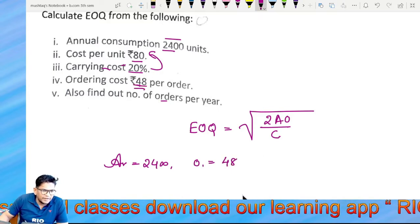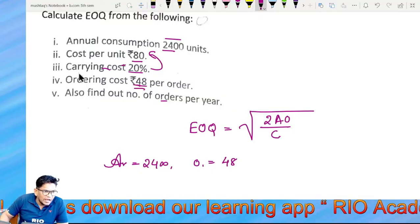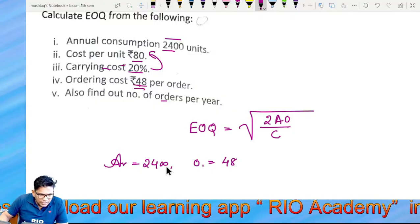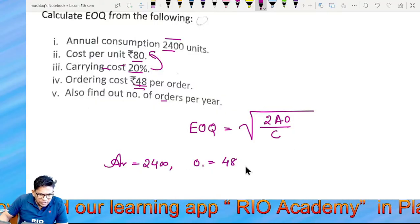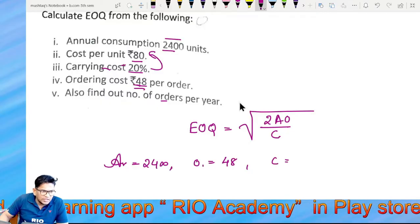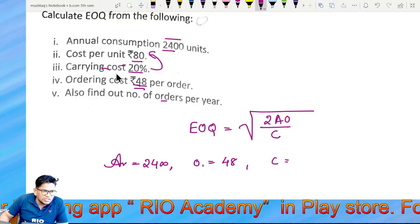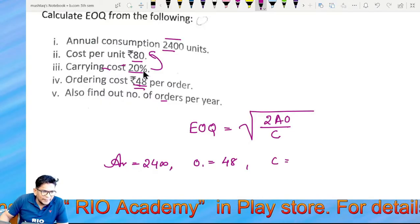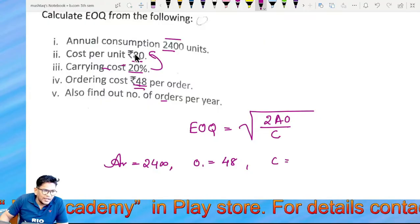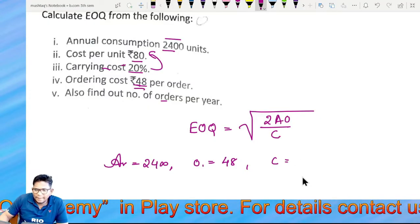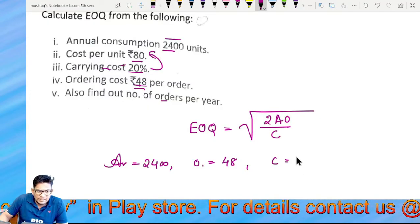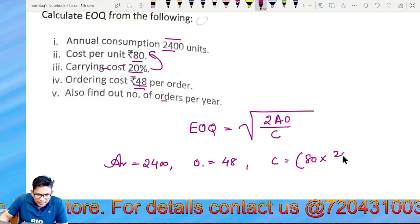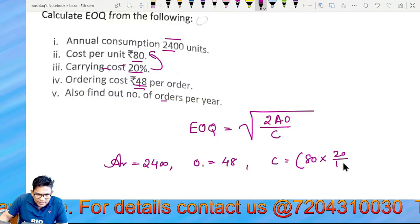Now the carrying cost — carrying cost is 20 percent of 80 rupees, so 80 multiplied by 20 percent.